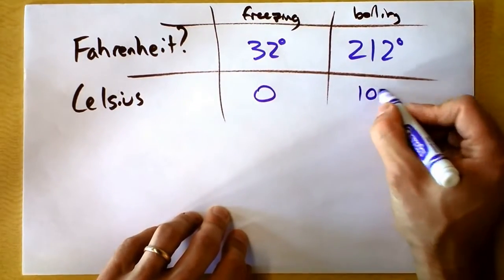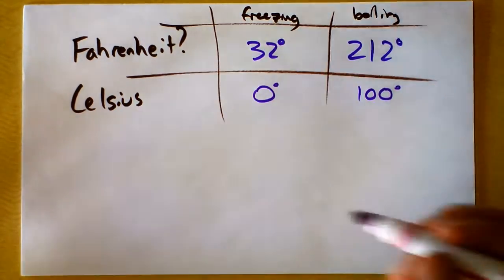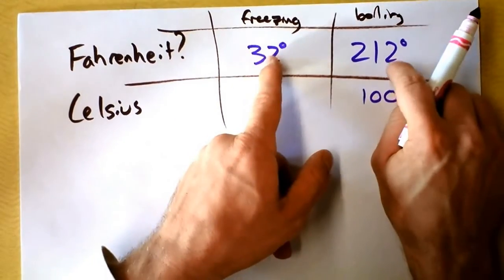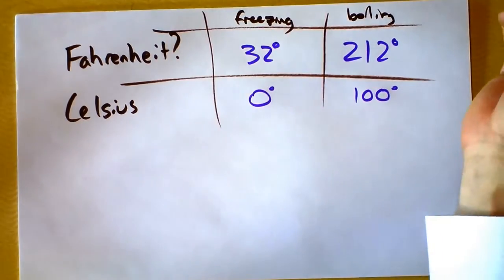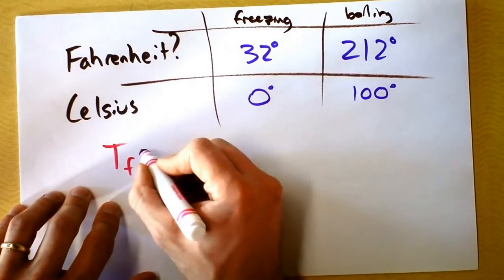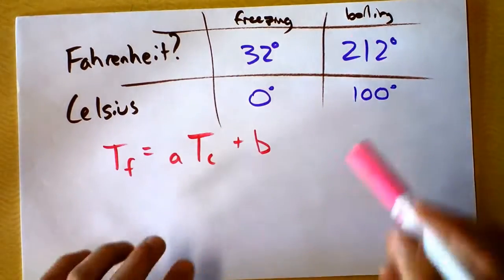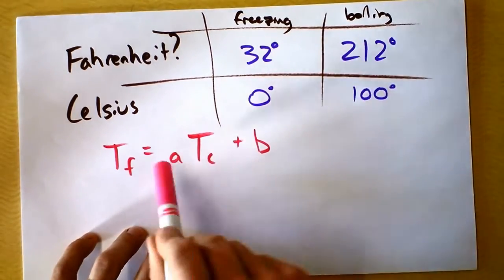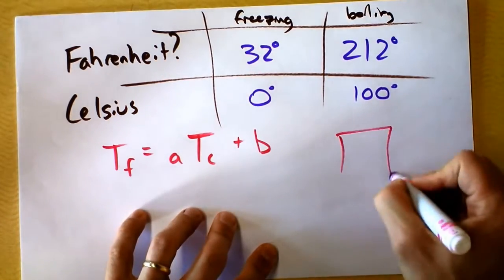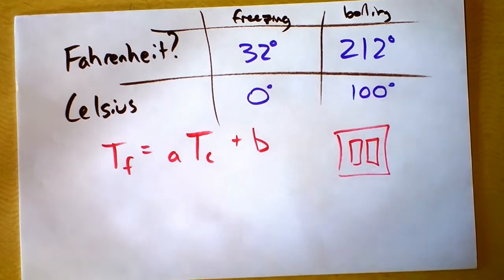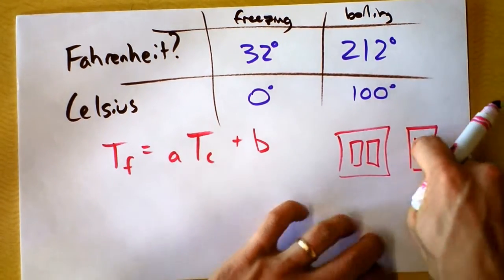Some easy numbers to remember are zero and a hundred — those are easy numbers to remember. There's a linear relationship because I'm taking 180 Fahrenheit degrees and stretching it down to just 100 Celsius degrees, and I'm offsetting it because the freezing points aren't the same. So we make an equation: temperature in Fahrenheit equals some number times temperature in Celsius plus some offset. Using that equation and the four reference facts, you can derive the full relationship. I suggest you do it right now.